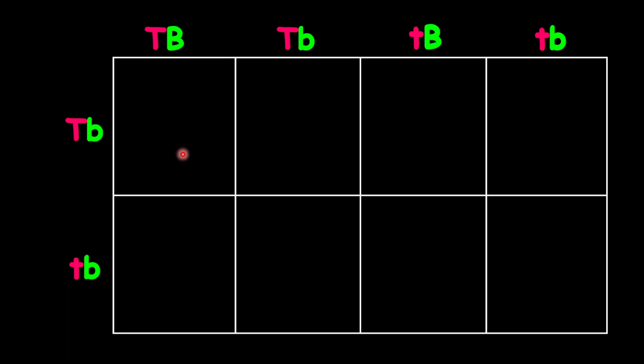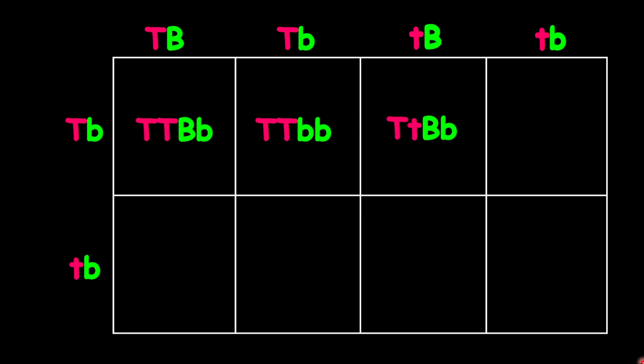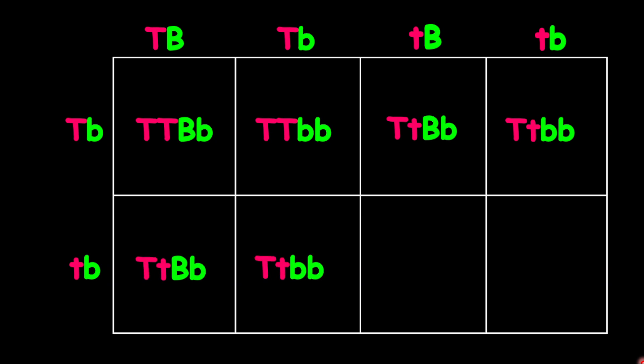To fill these out, you can always slow down and check the combination row by column to make sure that you understand the combination for each box. Row by column — and we want to put the like alleles together to make it appropriate. This will be the result.